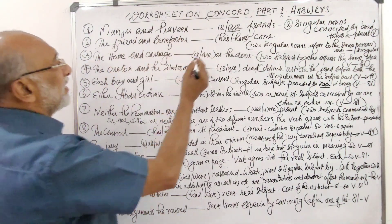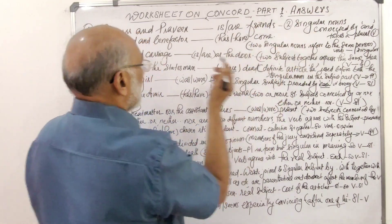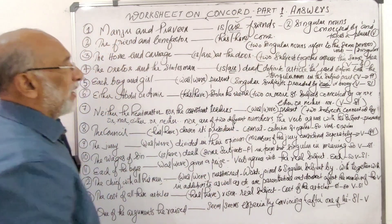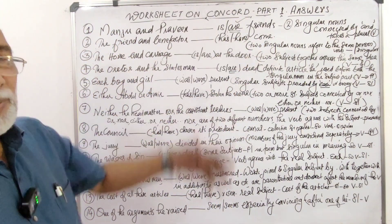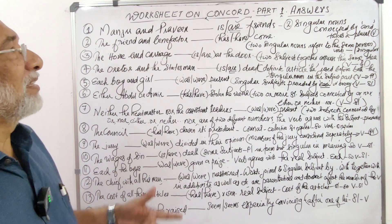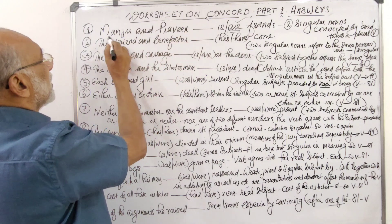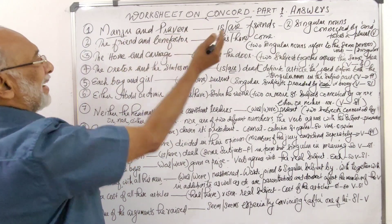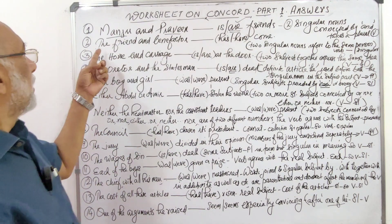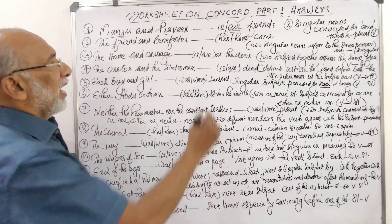Question 1: 'Manju and Praveen is/are our friends.' The answer is 'are our friends.' Why? Two singular nouns connected by 'and' take a plural verb — that is a normal principle. I think you know it very well. Manju and Praveen — two singular nouns connected by 'and' take a plural verb.